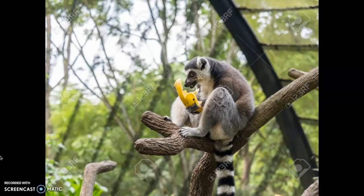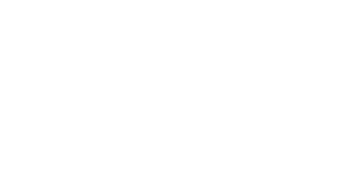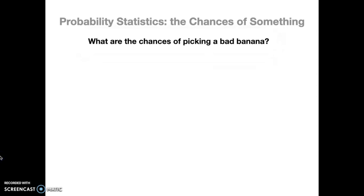But this presentation is for lemurs. It's directed for lemurs. And lemurs like bananas, as you can see in this picture here. So first off, probability statistics is basically just the chances of something. What are the chances of picking a bad banana if you're a lemur? Which I assume you are if you're watching this.